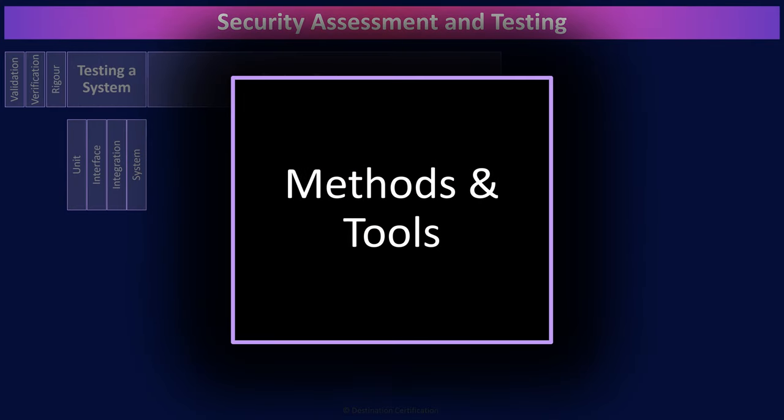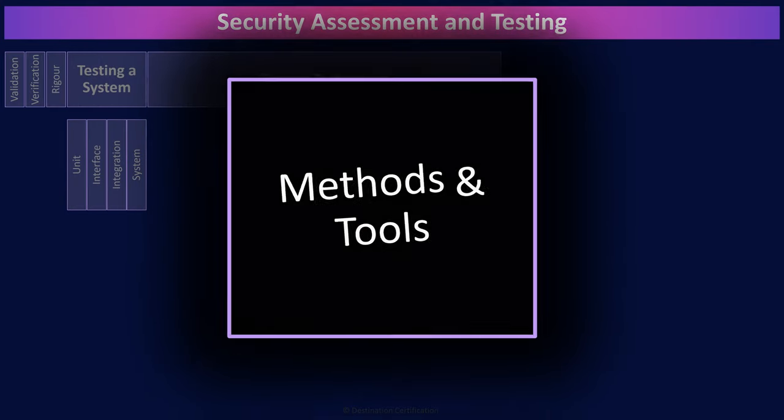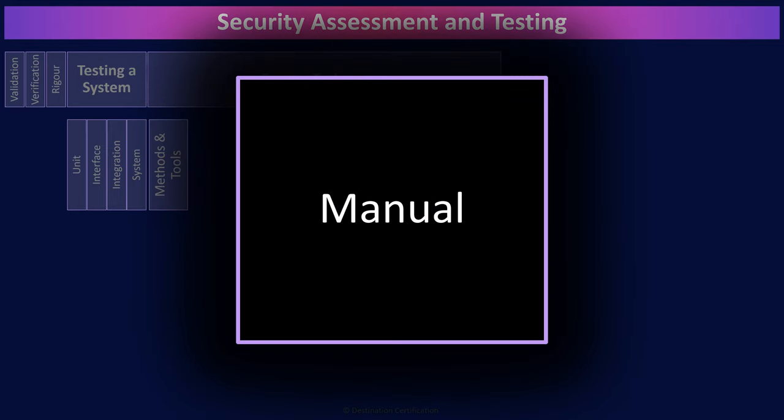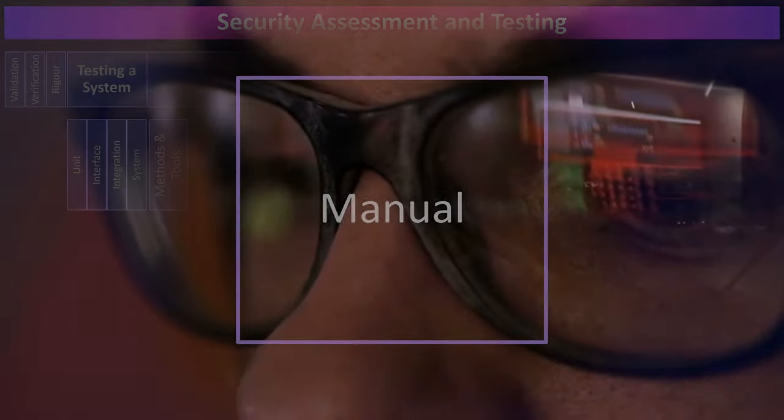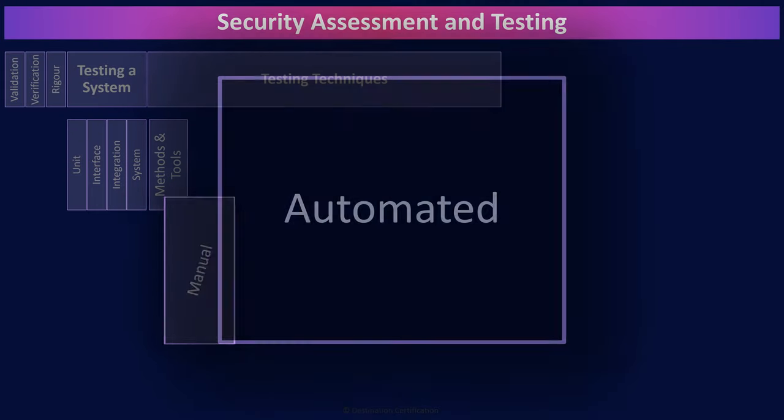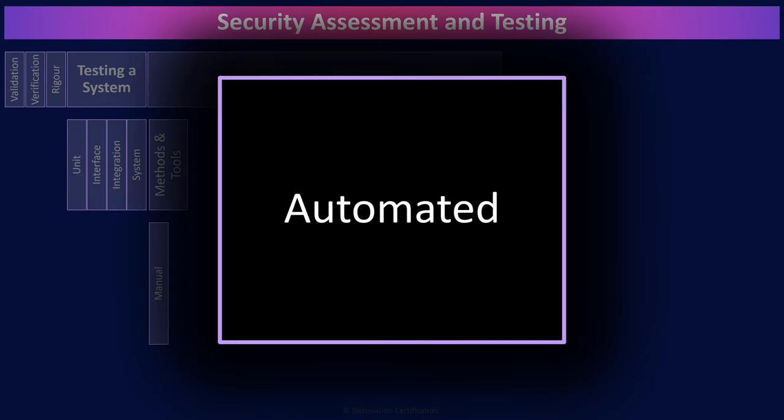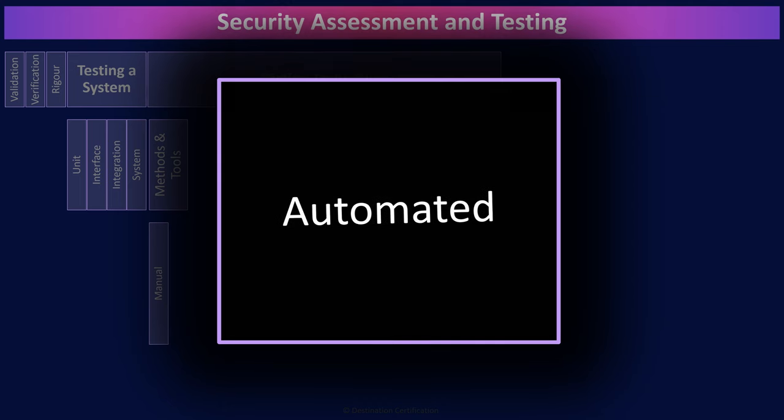There are two main methods that we can use to perform testing. Manual testing is hands on keyboard, a person manually reading code or performing some action on a running program. Automated testing implies the use of automated tools, software to test other software, for example, code scanning tools or vulnerability scanners.